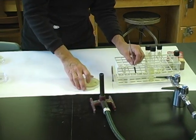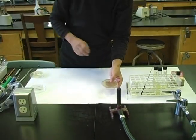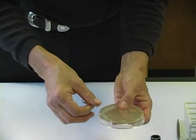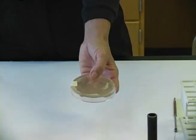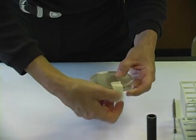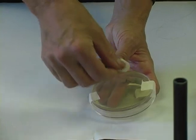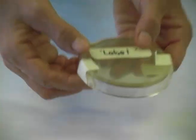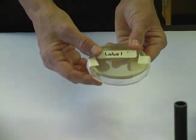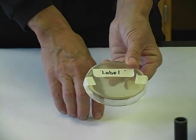I'll tape my petri dish, the lid to the bottom. I'll make sure that my label goes on the bottom of the plate and I will then place my plate inverted or upside down in the incubator.